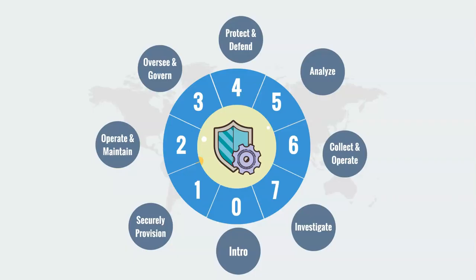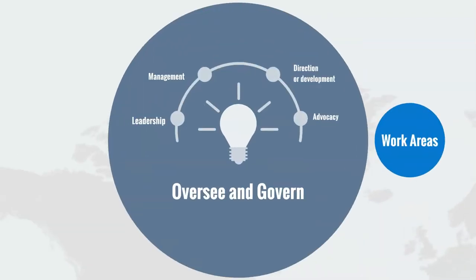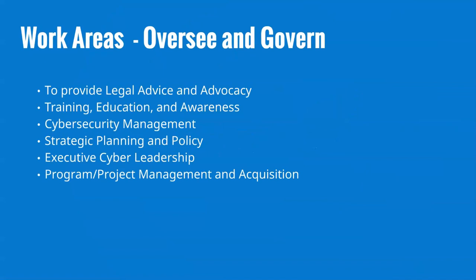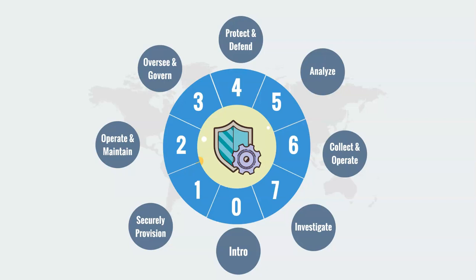The third domain is Oversee and Govern. This domain helps to provide leadership, management, direction, development, and advocacy so the organization may effectively conduct cybersecurity work. The work areas under this domain include legal advice and advocacy, training, education and awareness, cybersecurity management, strategic planning and policy, executive cyber leadership, and program and project management and acquisition.